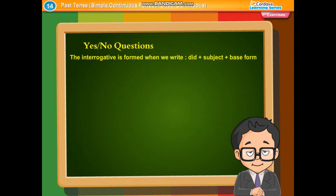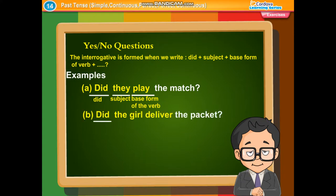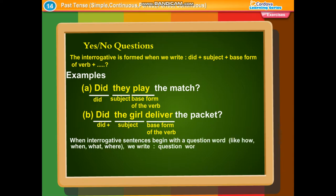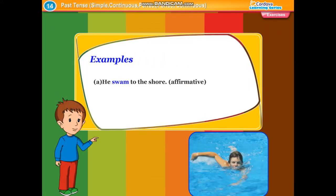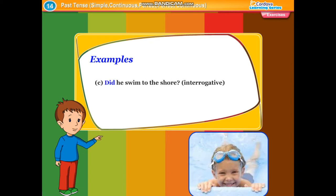The interrogative is formed when we write: did plus subject plus base form of the verb plus question mark. Examples: Did they play the match? Did the girl deliver the packet? When interrogative sentences begin with a question word like how, when, what, or where, we write: question word plus did plus subject plus root form of the verb plus question mark. Examples: When did she leave? What did Neha bring? Further examples: He swam to the shore — affirmative. He did not swim to the shore — negative. Did he swim to the shore? — interrogative.